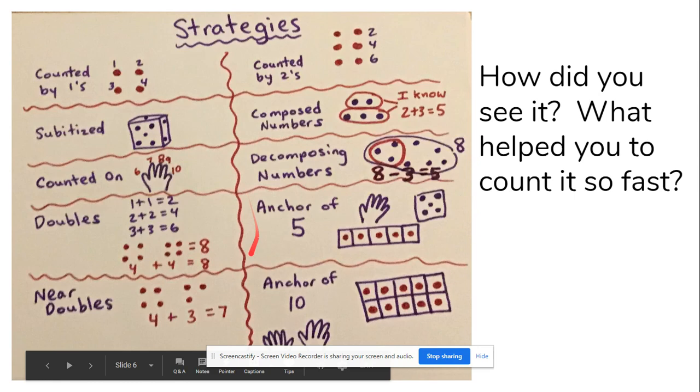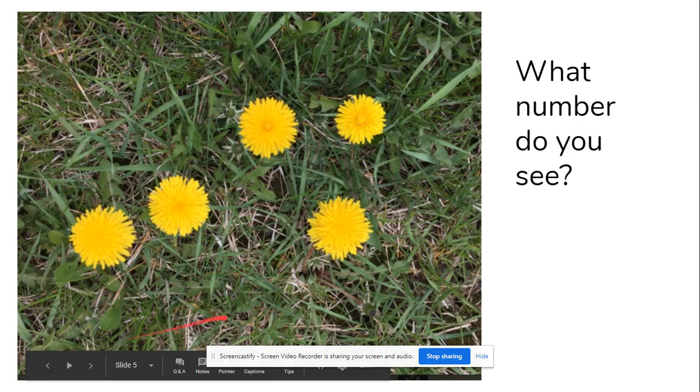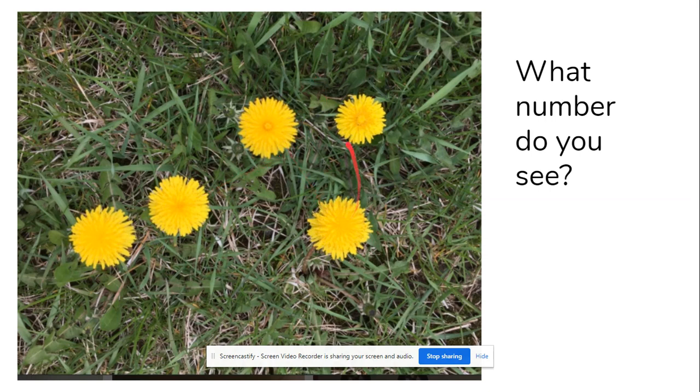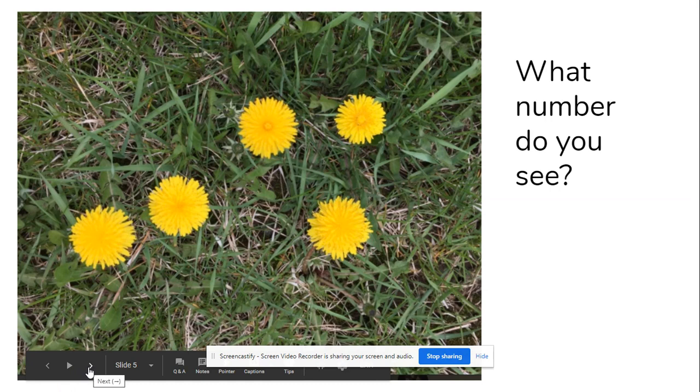What strategy did you use? Did you just know a picture or subitize the number five? Maybe you tried counting on. I'm going to show you the strategy I used. I saw a picture of three here and then I counted on two more. So I put three in my head and went four, five. Tell an adult what strategy you used.